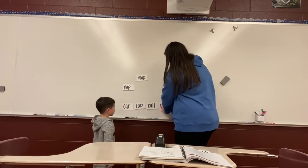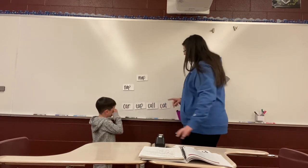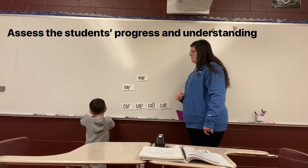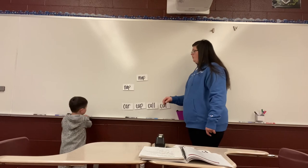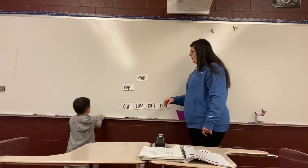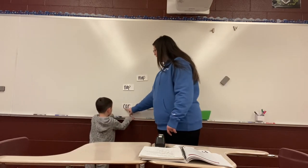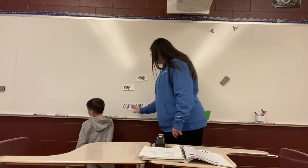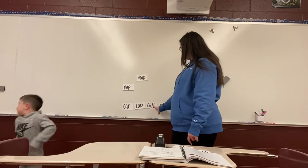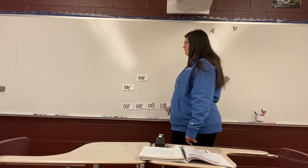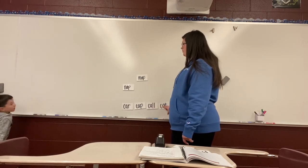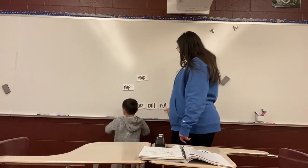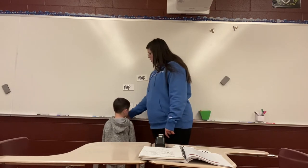All right, Luke, I think you did a very good job. What is the beginning sound that is the same? C. What sound does a C make, Luke? C. So let's sound them out: C-R, C-A-P, C-A-P, C-A-L, C-A-T. They all have the same beginning sound.